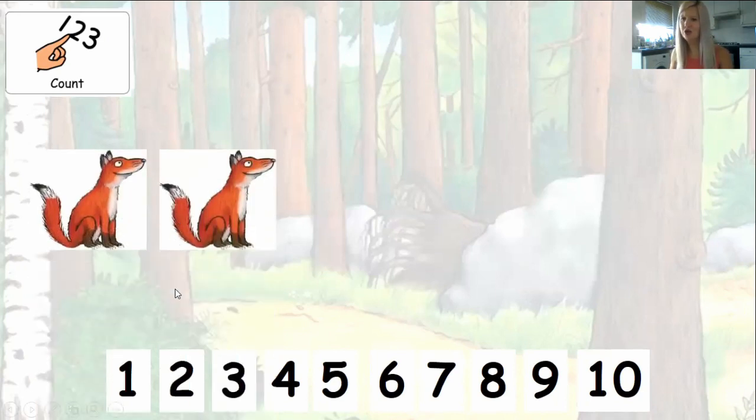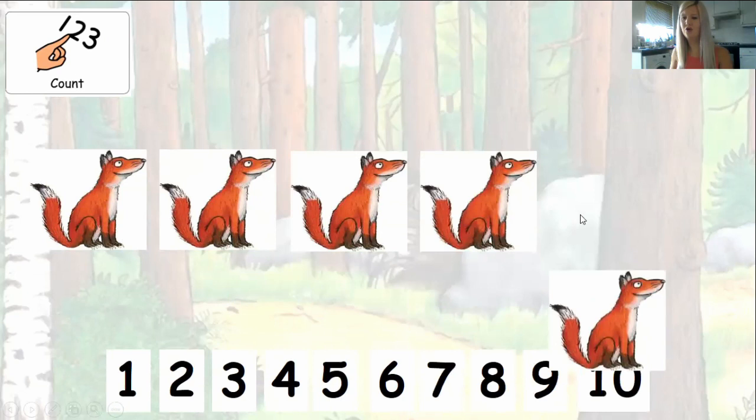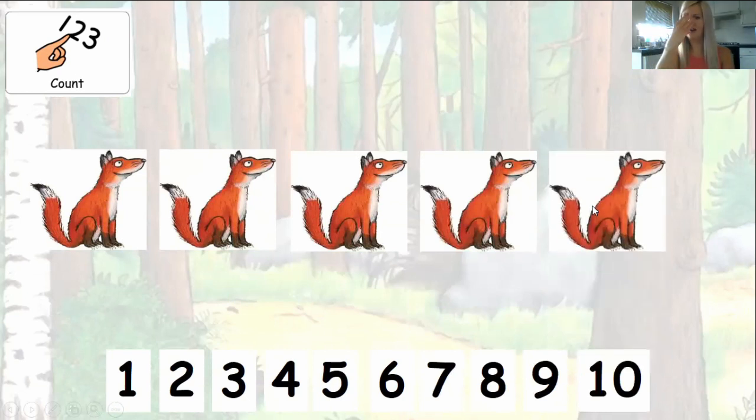Next one. Counting one fox, two foxes, three, four, five foxes. Which number is five? One, two, three, four, five. Can you point at number five?